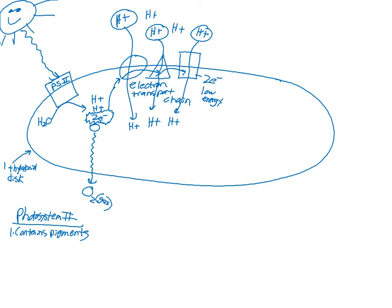We had two electrons in photosystem II — they were energized and became high-energy electrons, and they were replaced by splitting the water. The electrons came from the water; the oxygen leaves as oxygen gas and combines with another. The two high-energy electrons get moved through the members of the electron transport chain, which use the electrons' energy to actively transport H+ ions from outside the thylakoid — that's called the stroma — to inside the thylakoid. We use electron transport chains in our cells too, so these concepts show up in anatomy, AP bio, or college biology.